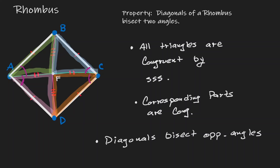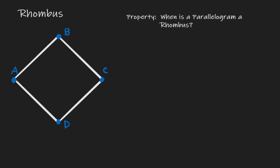Let's take a look at the last property for a rhombus. Here, let's assume that on the left-hand side we don't know that it's a rhombus — let's assume we only know that it's a parallelogram. If it's a parallelogram, the only thing we know is that opposite sides are parallel and congruent to each other. But now let's say that there are two consecutive sides that are congruent to each other — say side AB and side AD. If two consecutive sides are congruent, that's enough condition for us to claim that this is a rhombus.